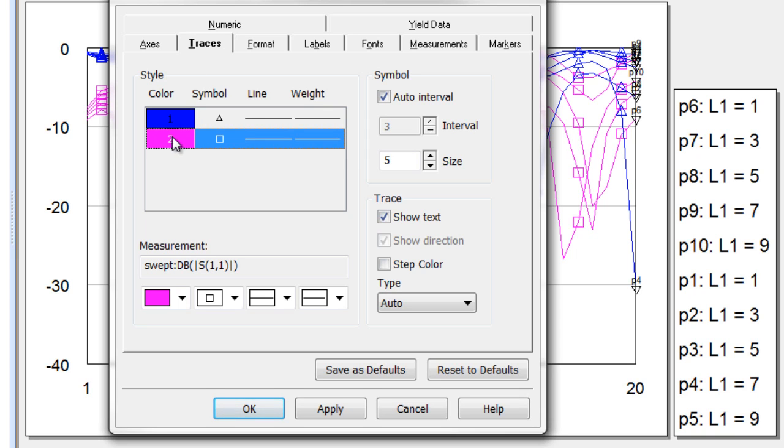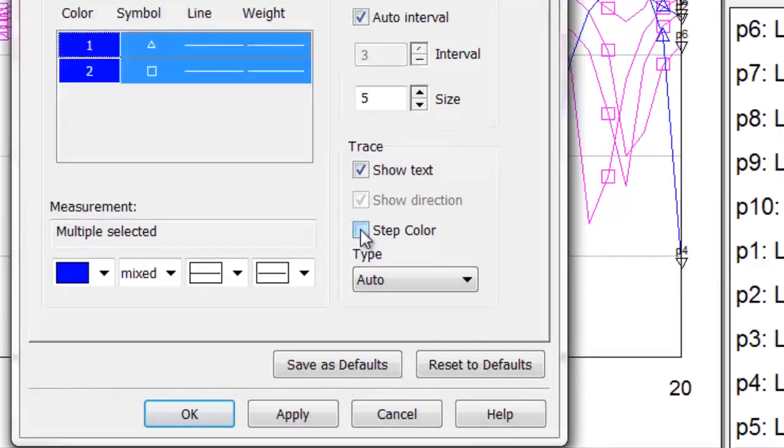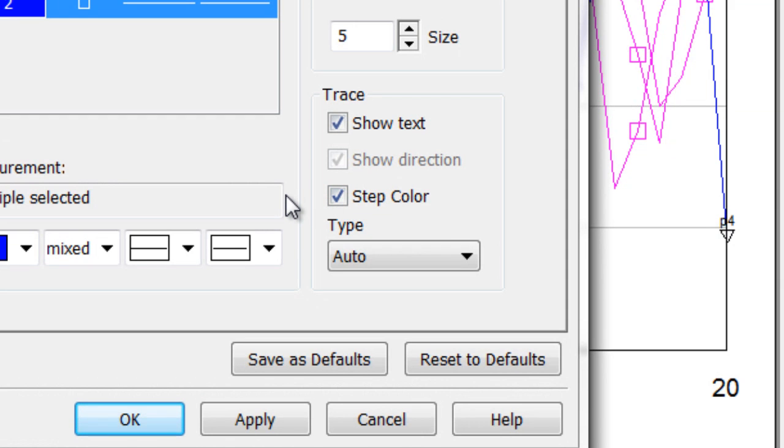I'm going to go ahead and change the traces to the same color to demonstrate another new property we have, which is stepped colors for trace values. I'm holding down the shift key here so that I can select both traces. I go over to the step color button and select it, and I hit apply.